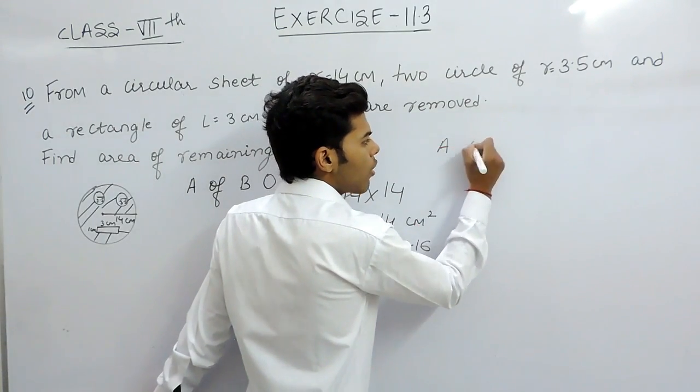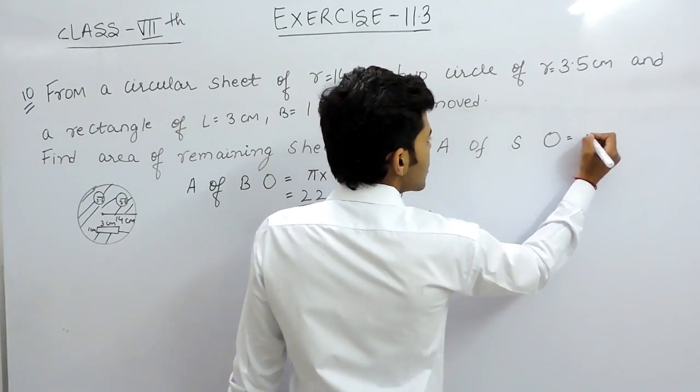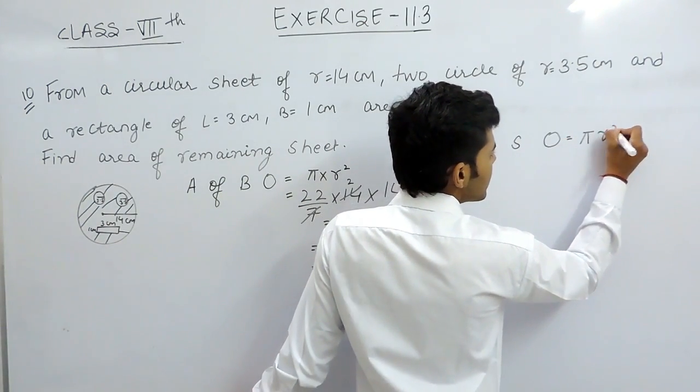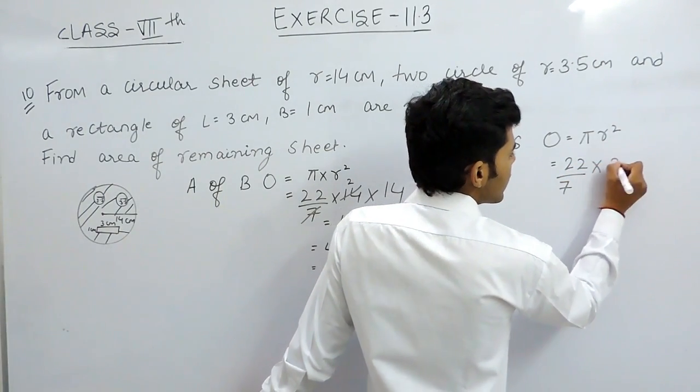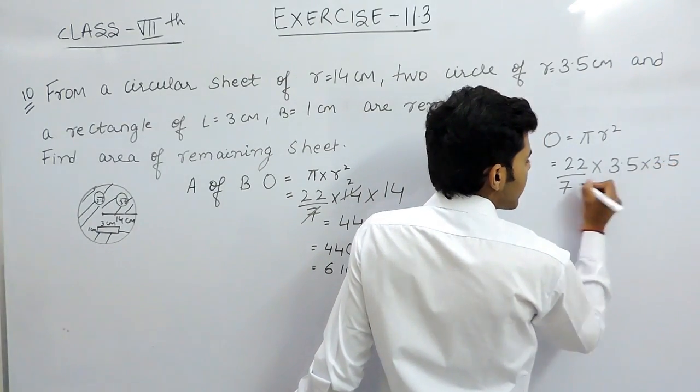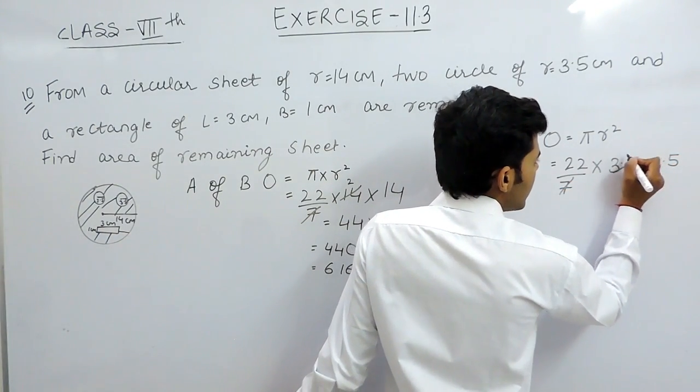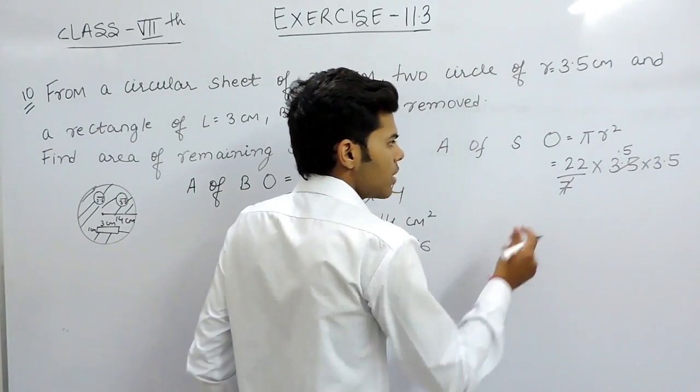Now, area of smaller circle equals to again πr², that will be equal to 22/7 multiplied by 3.5 multiplied with 3.5. 7.5 times, 0.5 multiplied with 22 will give us 11 multiplied with 3.5.